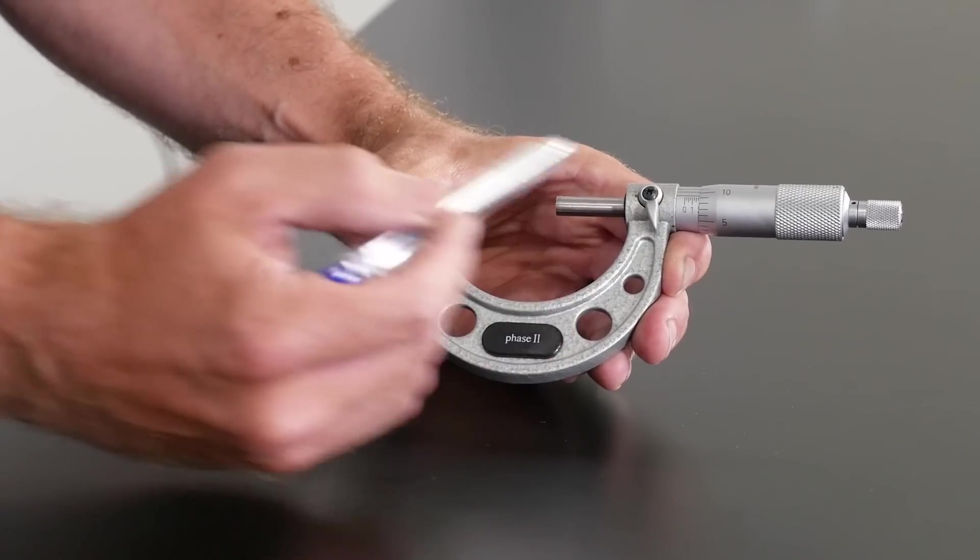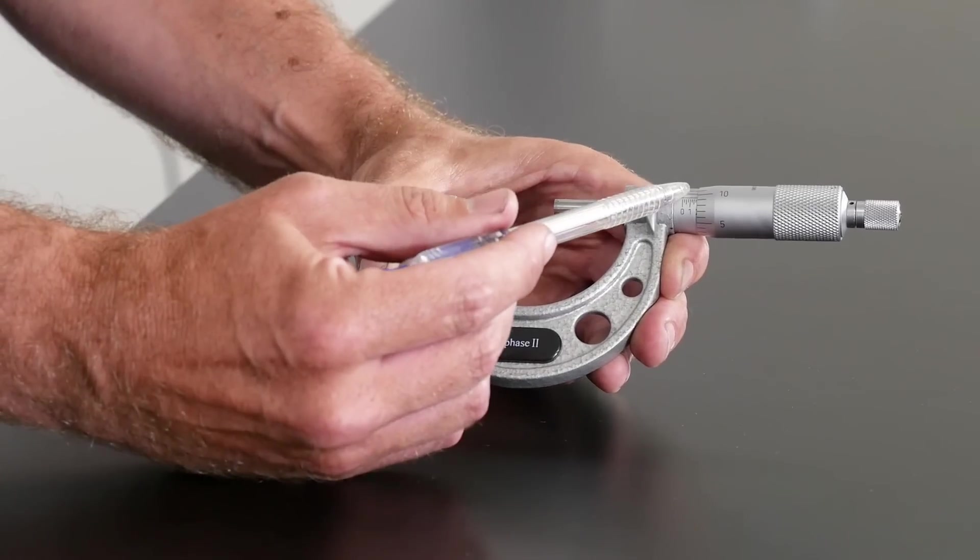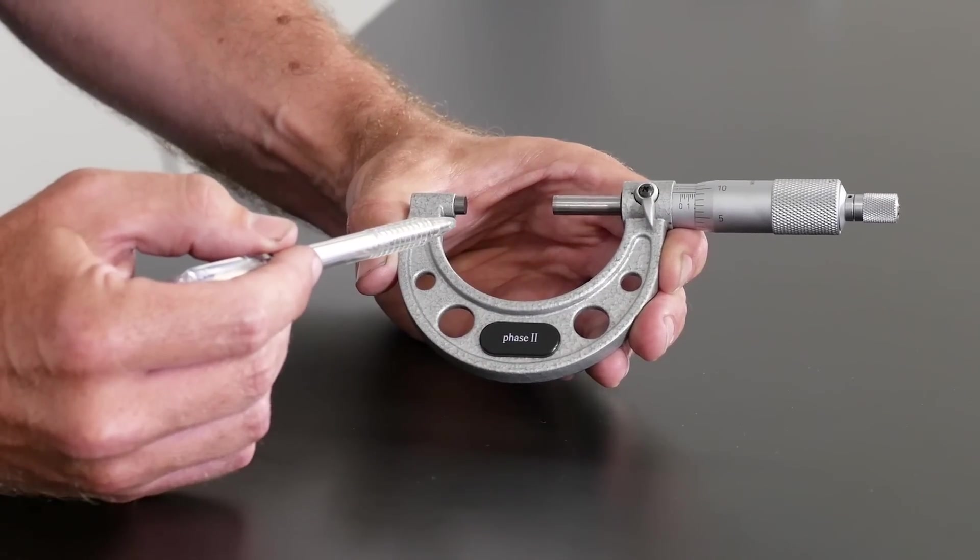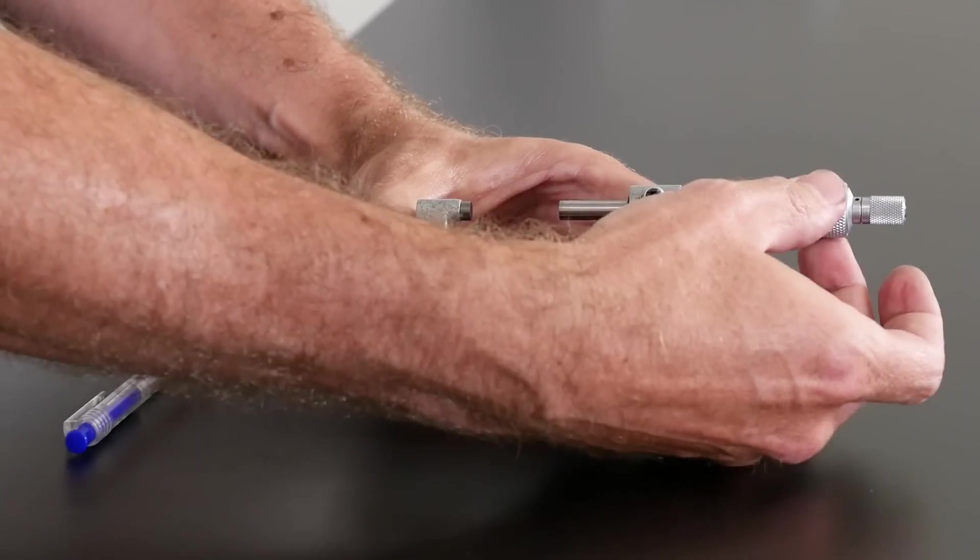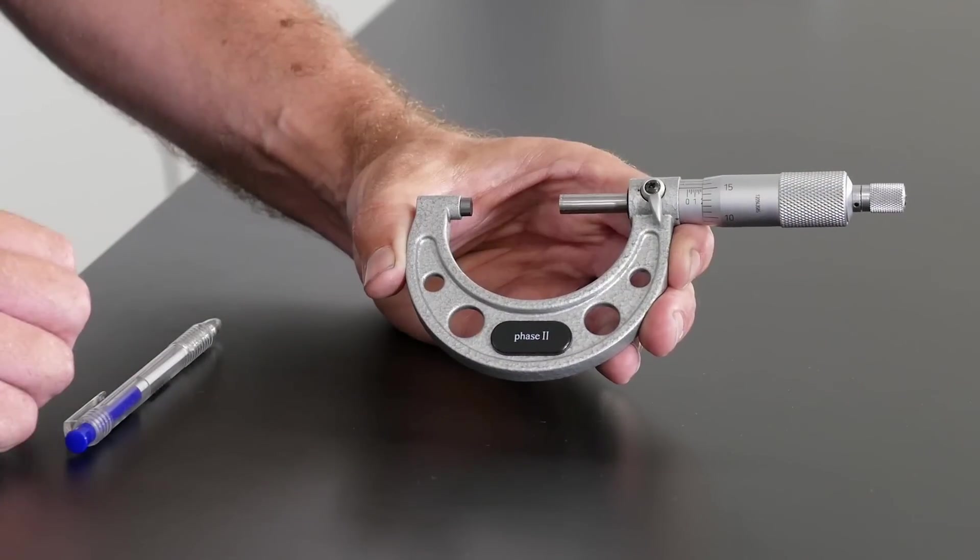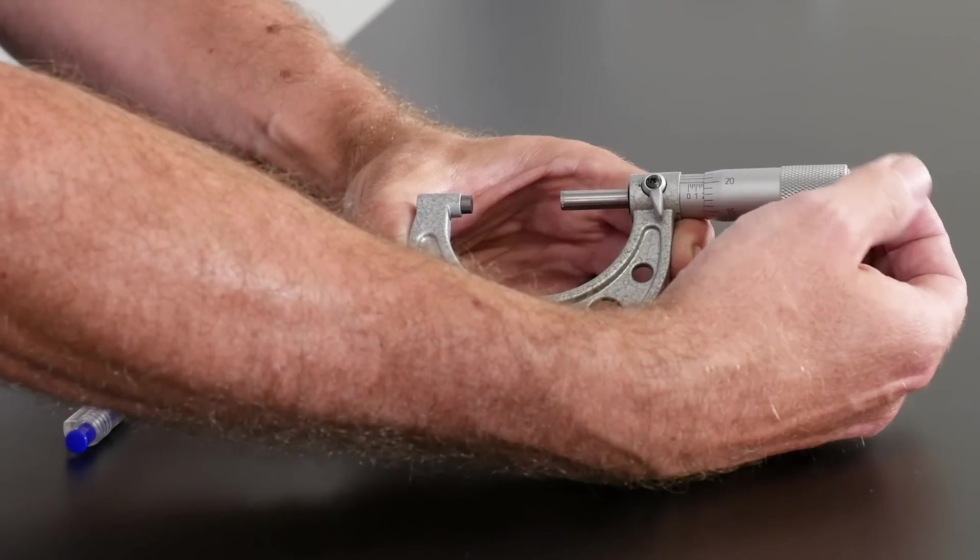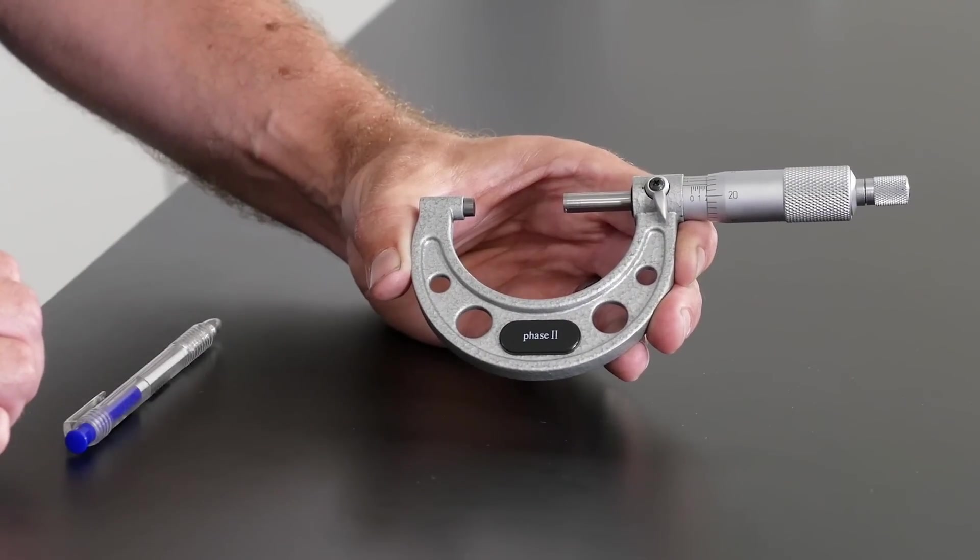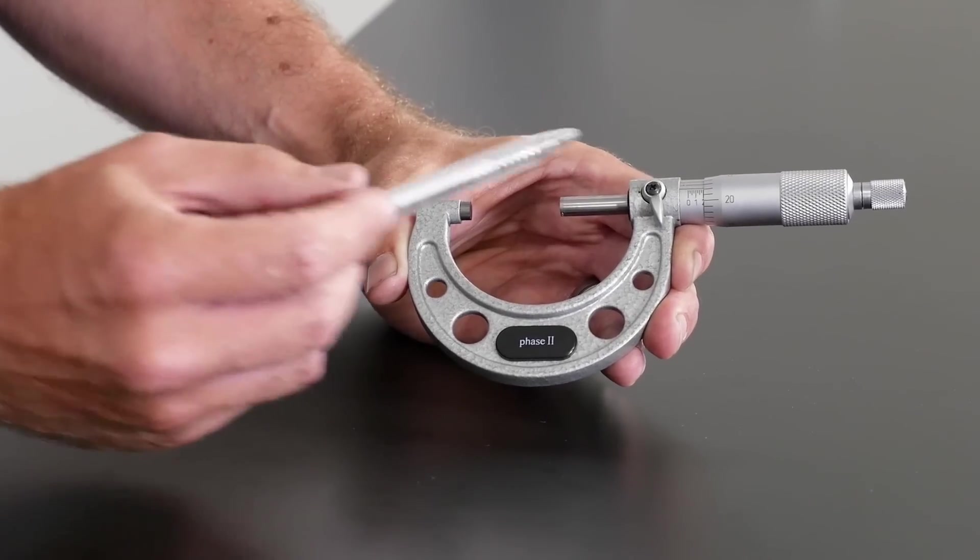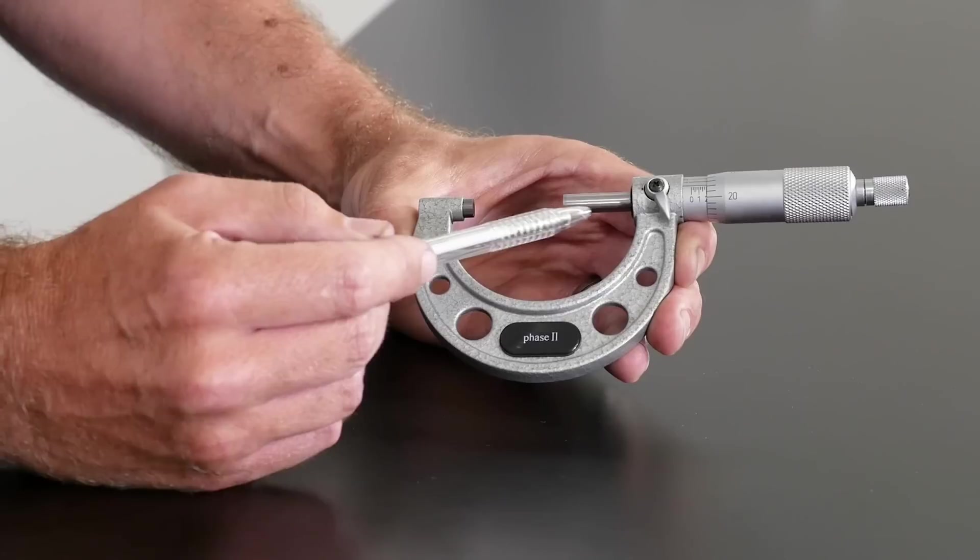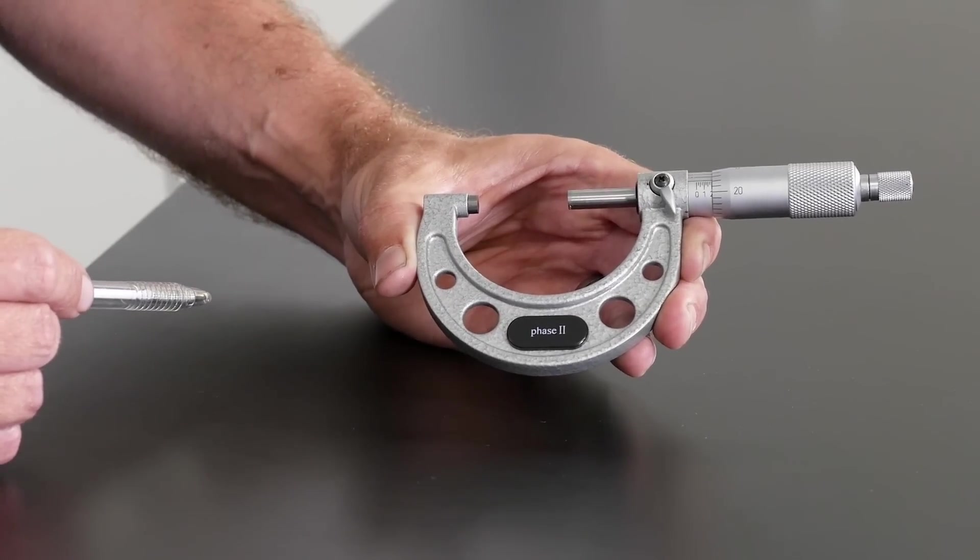Here we have our measuring scale which we'll be looking at in more detail shortly. This particular component where our scale is written is known as the barrel or sleeve of the micrometer. Next we have the turning component which is known as the thimble. And finally at the end we have our ratchet stop which is what we're going to be using for actually tightening the micrometer down on the component we're measuring. We also have a positive stop which we can use to lock the micrometer once we've measured the component of interest.